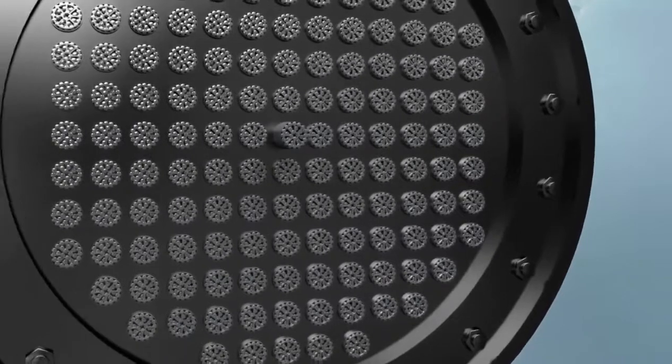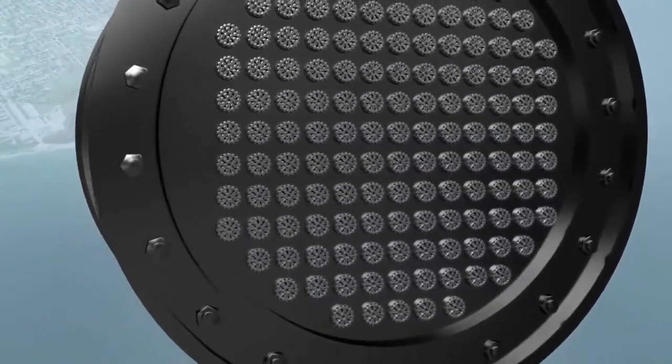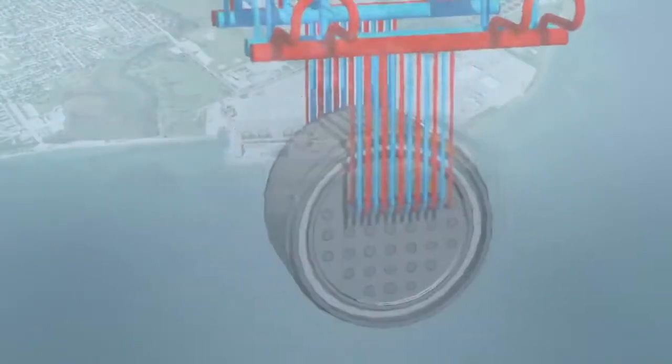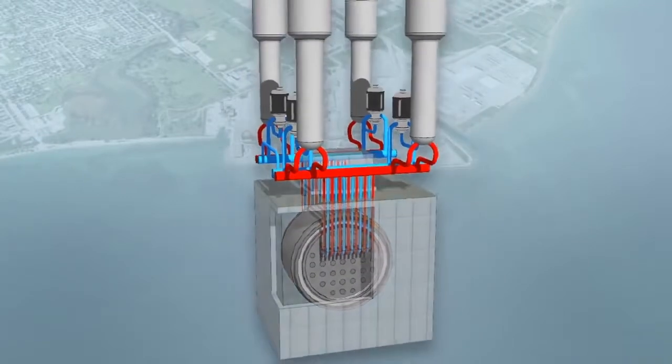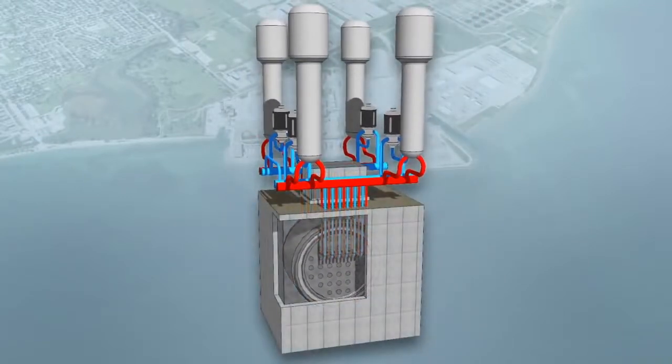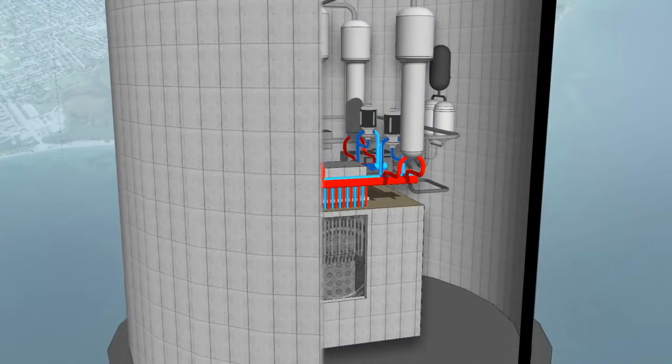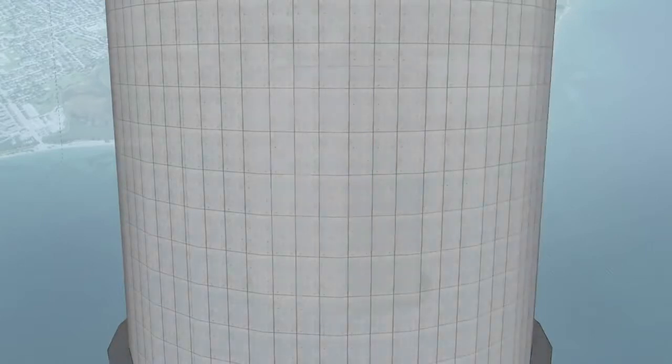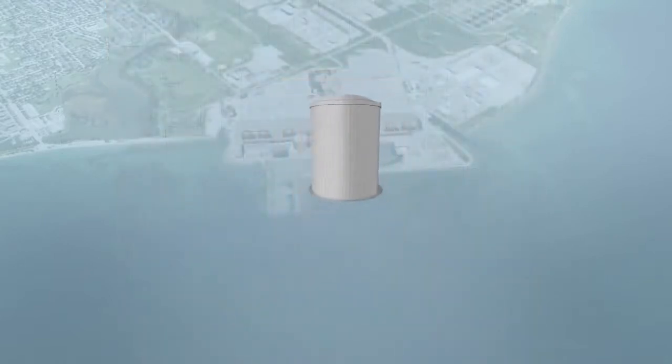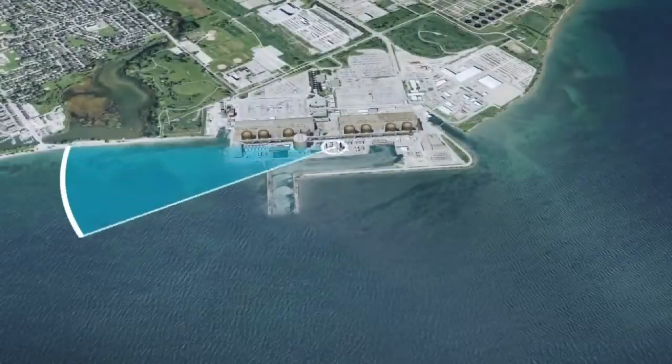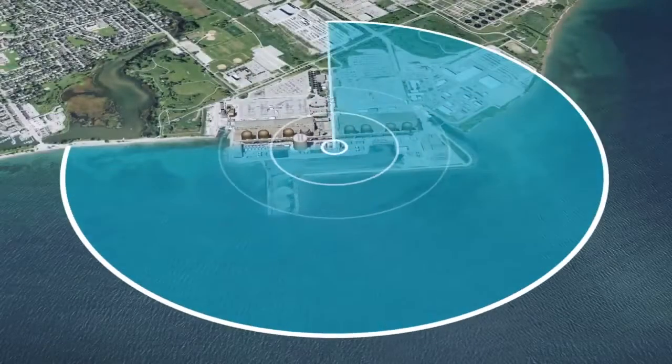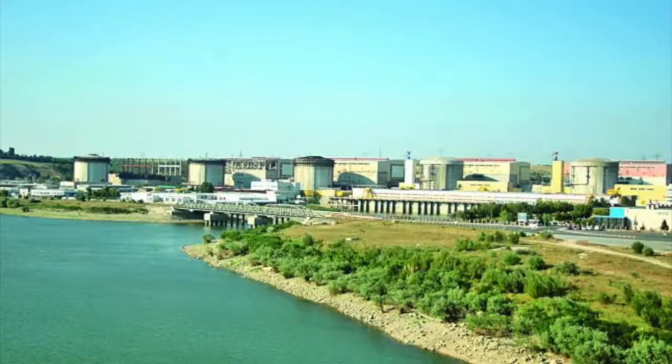The pressure tubes are contained inside a metal tank, called the calandria, which itself is contained inside a thick vault made of reinforced concrete. The fourth layer of containment is the building that houses and protects the reactor. The walls of the reactor building are made of at least one meter of reinforced concrete. The reactor building is surrounded by a one kilometer exclusion or buffer zone.